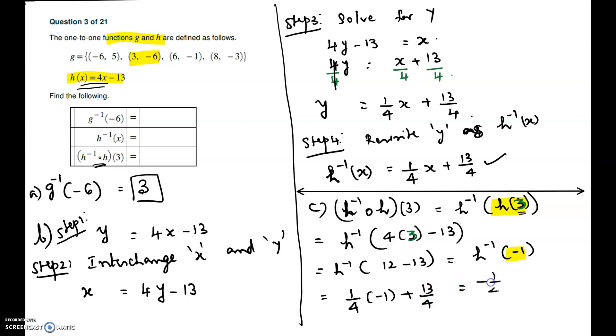So it is -1/4 + 13/4, which is 12/4, which equals 3. So h inverse composite h at 3 equals 3.